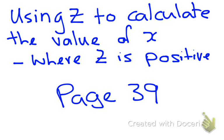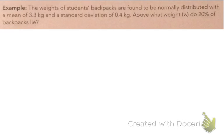We're on page 39, using z to calculate the value of x where z is positive. So this is our inverse normal probability calculations. We've done the first step, going from the probability to the z value. Now we're looking at how to calculate the value of x. So we've got our backpack problem again. We're told that it is a normal distribution that has a mean of 3.3 and a standard deviation of 0.4 kg. The clue that tells us this is an inverse normal probability question is that it says, above what weight do 20% of the backpacks lie? As soon as we see a percentage, we know it's talking about an inverse normal calculation.